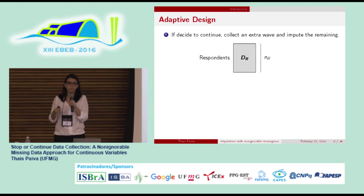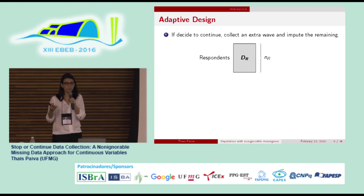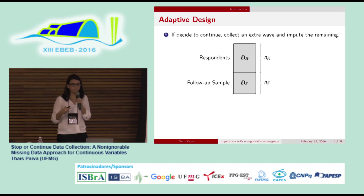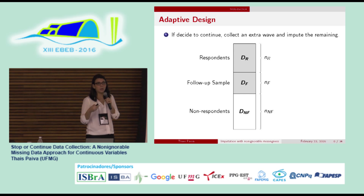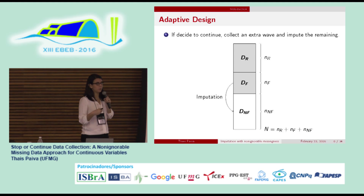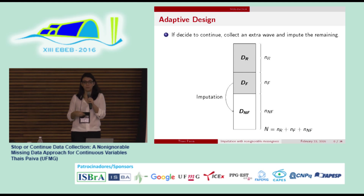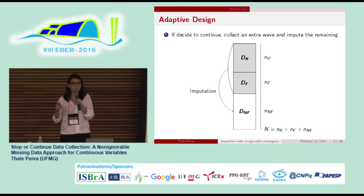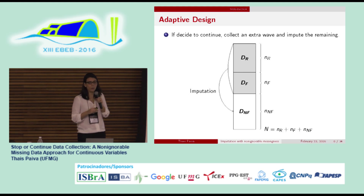The second option, if we decide to continue, we collect an extra wave. We have the first respondents, then we collect a follow-up sample, and we still have some non-respondents which we then impute. We can impute them assuming they look like the follow-up sample — fitting the model to the follow-up sample — or assuming they look like the entire set of observations, imputing based on everything we have observed.